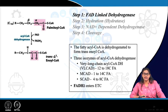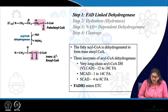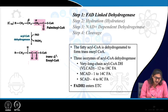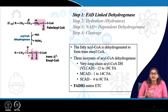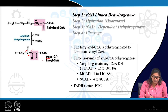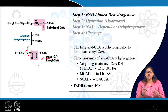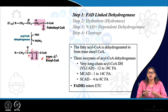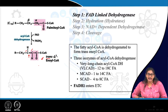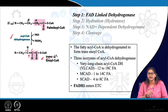FAD-linked dehydrogenase causes dehydrogenation and introduction of one double bond between the alpha and beta carbon. Remember, this double bond is of the trans variety, so the product is trans-delta-2-enoyl coenzyme A. This contrasts with endogenous or dietary fatty acids, which are mostly in cis configuration. The enzyme acyl CoA dehydrogenase has multiple isoforms based on chain length: VLCAD for very long chain, MCAD for medium chain, and SCAD for short chain.